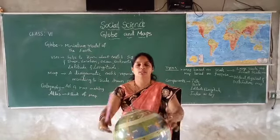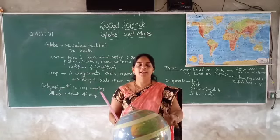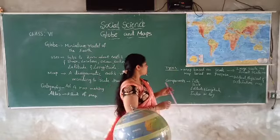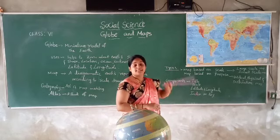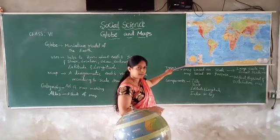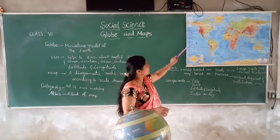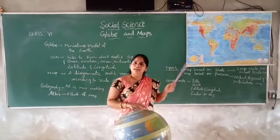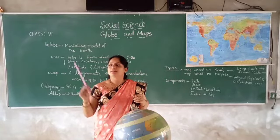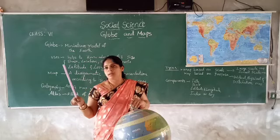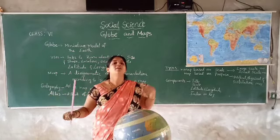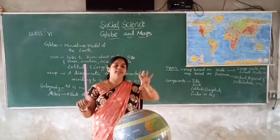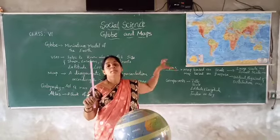Then latitude — from west to east it will be rotating; when the earth is rotating, the latitude also rotates. There are five latitudes. Next, the last component: index or key. Here the colors are mentioned, and that helps you recognize the political or physical features. When you are traveling, they put boards like hospital, hotel, lodge, church — like that they are symbols. Those symbols are mentioned in the map, and through those symbols we can read the map very easily.